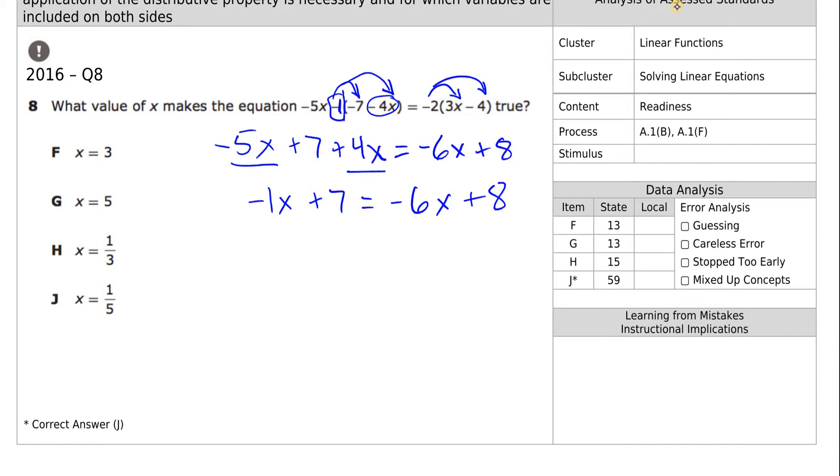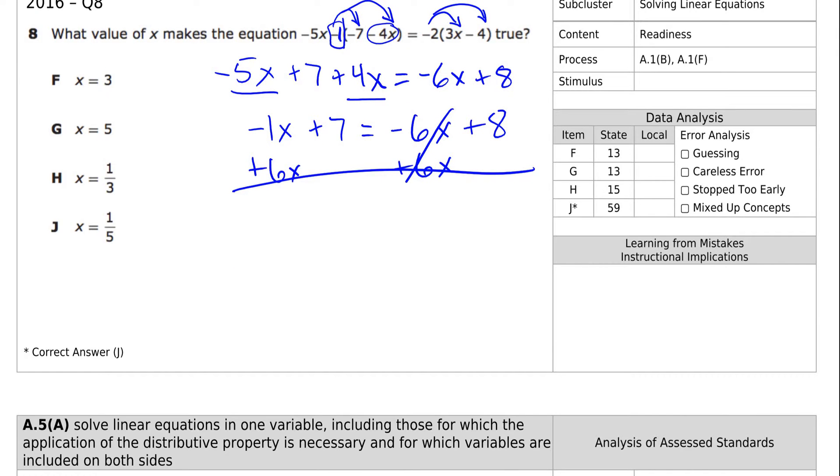We have like terms that we can combine. Negative 5 and negative 4 gives us negative 1x, or just negative x, plus 7 equals negative 6x plus 8. We want to get rid of this negative 6 plus 6x plus 6x. We have negative 1x plus 6x, which gives us 5x. Bring down the 7. The 6x's are gone, equals plus 8.